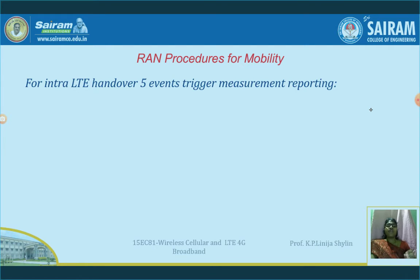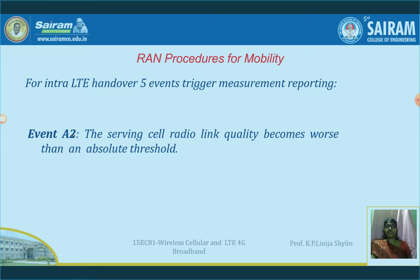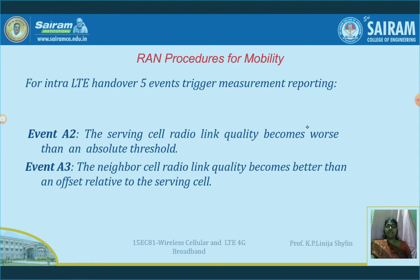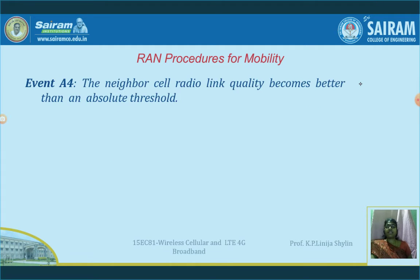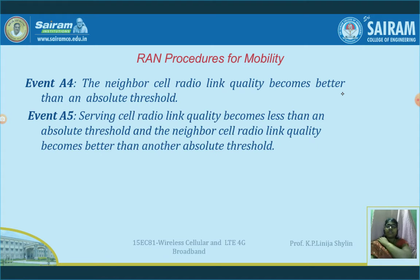For intra-LTE handover, five events are needed to trigger measurement reporting. Event A2: whenever the serving cell radio link quality becomes worse than an absolute threshold, event A2 is enabled. Event A3: the neighbour cell radio link quality becomes better than an offset relative to the serving cell. Event A1: the radio link quality becomes better than an absolute threshold. Event A4: quality becomes less than an absolute threshold. Event A5: neighbour cell radio link quality becomes better than another absolute threshold. These five events continuously drive this process.